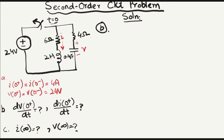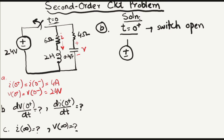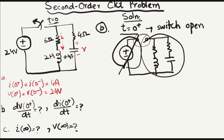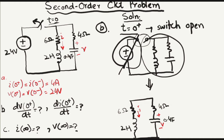Let's move to part B, at t equals 0 positive, just after the switching time. At t equals 0, the switch becomes open, making an open circuit, and the voltage source is excluded from the remaining circuit. Simplifying, we now have only a source-free RLC circuit with no source — only the resistor, capacitor, and inductor. Here is the inductor current and the capacitor voltage.